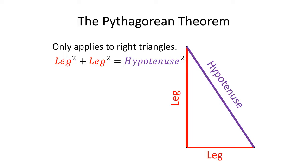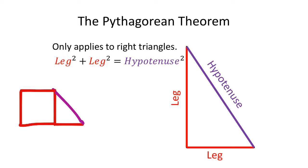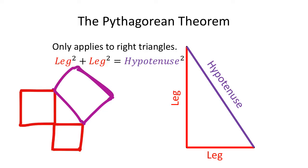Let me show you how this works pictorially. We've got a leg, a leg, and a hypotenuse — that's a right triangle with two red legs and a purple hypotenuse. What this means is: if I took the area of this side length as a square, and the area of this other side length as a square, it would equal the same area as the hypotenuse side length as a square. These two red squares would fit perfectly into the area of the purple square. That's what the Pythagorean theorem is saying, and that's what those people were meeting about in ancient Greece.